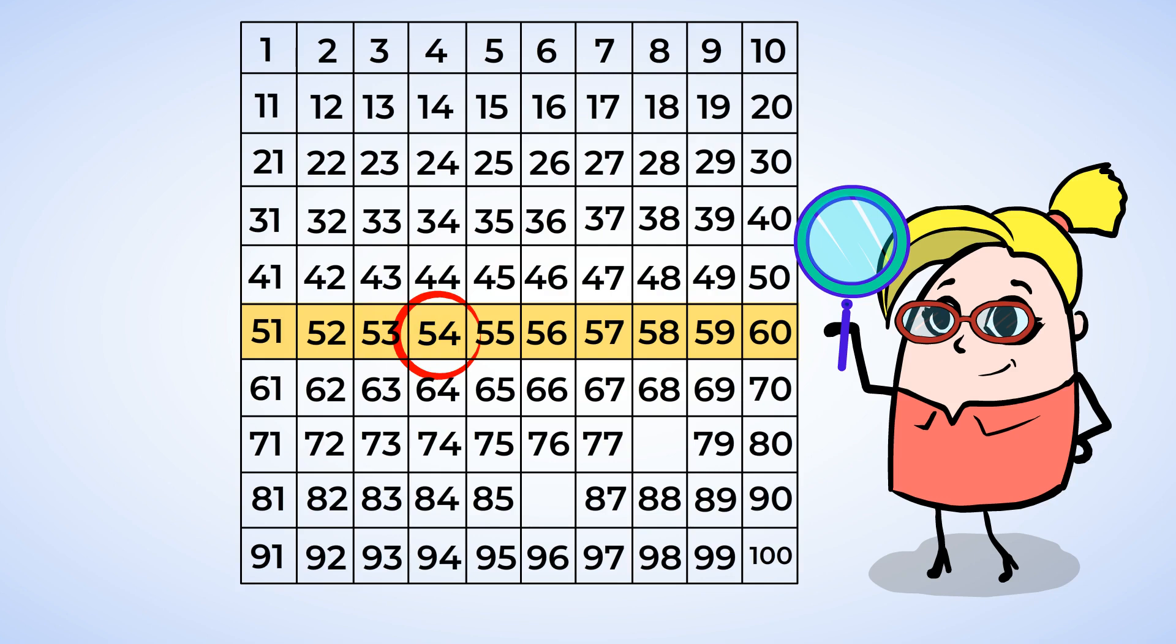After 54 comes 55, 56, 57, and so on. And let's look at the next missing number. This is the 70s row. So the number begins with a 7. The missing one is almost at the end of the row, so let's start counting from here.